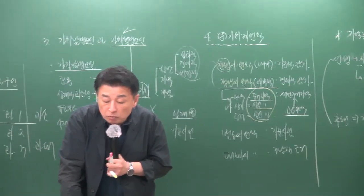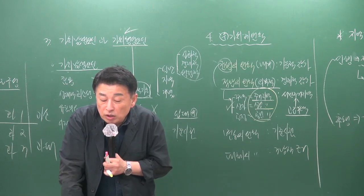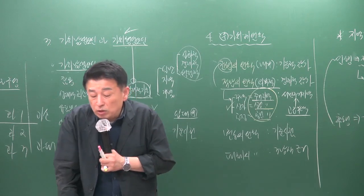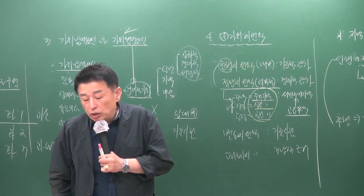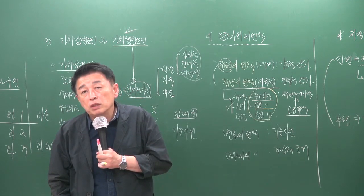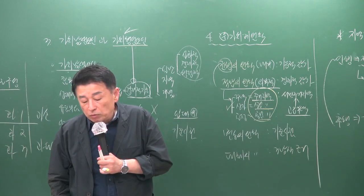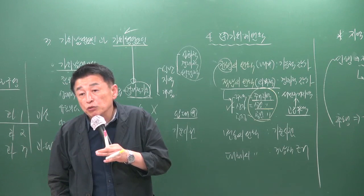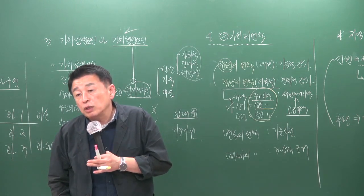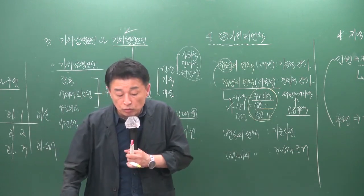3번 문제 2번 보기에서 유사 지역에서 사례를 구하면 지역요인의 비교 과정이 필요하지 않다고 하면 틀린 설명입니다. 유사 지역에서 사례를 구하면 지역요인 비교는 반드시 해야 합니다. 5번 보기에서 주거지의 동일수급권은 도심의 통근 범위 기준이며 지역적 선호도에 따라 범위가 축소될 수 있습니다.